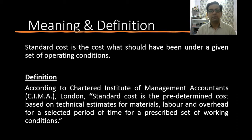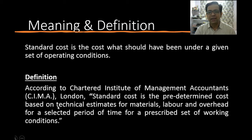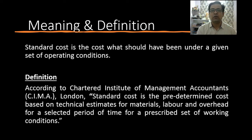For a prescribed set of working conditions — if there is any change in the working conditions, the standard cost would change, either decreasing or increasing. Also, the definition mentions technical estimates for materials, labor, and overheads, which tells us what we are going to learn: standard costing for materials, labor, and overheads, meaning this chapter is divided into three parts.